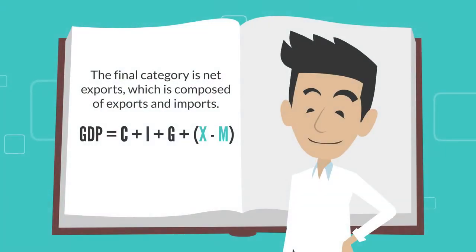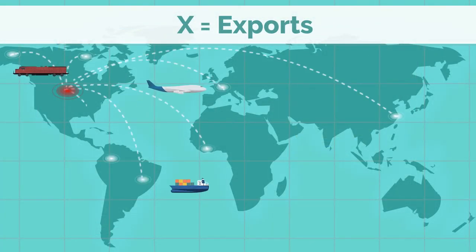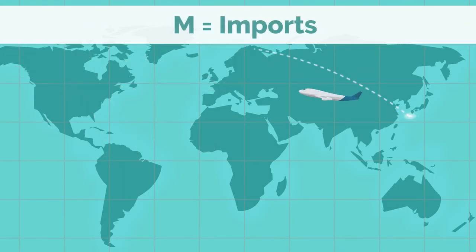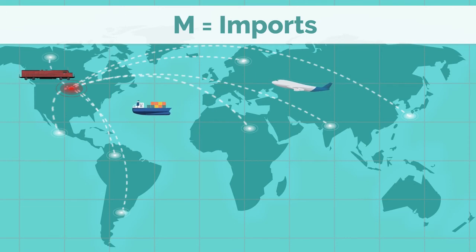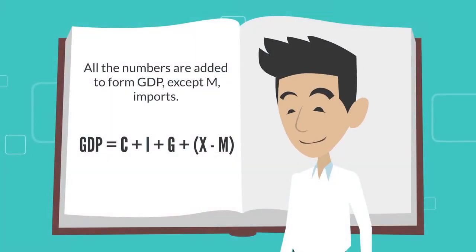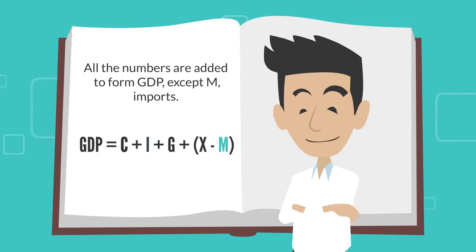The final category is net exports, which is composed of exports and imports. X is exports — it includes goods and services produced domestically but sold abroad. M is imports — it includes goods and services produced abroad but sold here. You will notice in our equation that all the numbers are added to form GDP except M, imports. We'll get to that a little later.